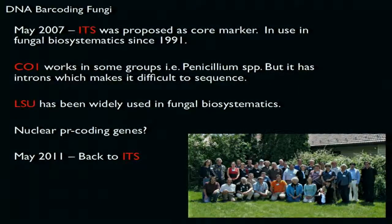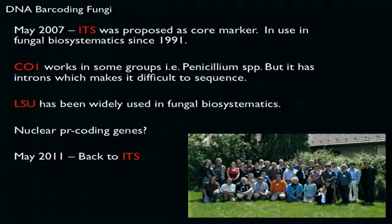This is fungi — very cryptic, very important, and unknown. There have been many efforts in terms of using markers for fungi. In May 2007, the ITS marker from a ribosomal segment was selected, though it's been used since 1991. Cytochrome 1 works for some groups, but there are introns in the mitochondrial genome of fungi, so it's probably better to stay away from mitochondria. The large subunit (LSU) of the ribosomal segment has also been used.